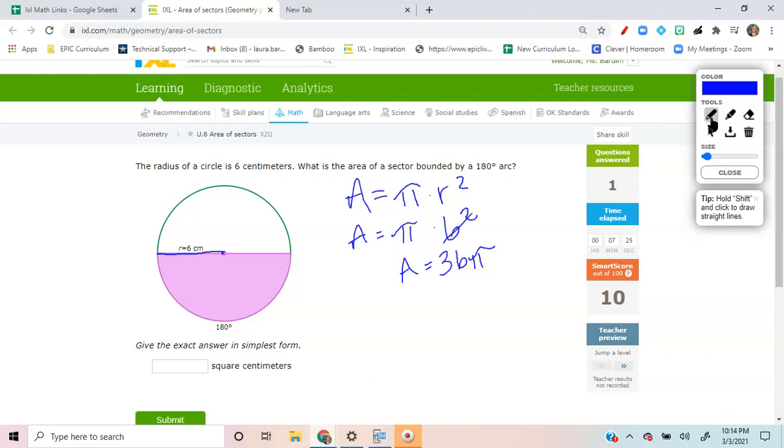What is the part of the arc? 180. What is the degree of the entire circle? Always 360. My skateboarders know that. 360. We're going to times that by 36 pi.